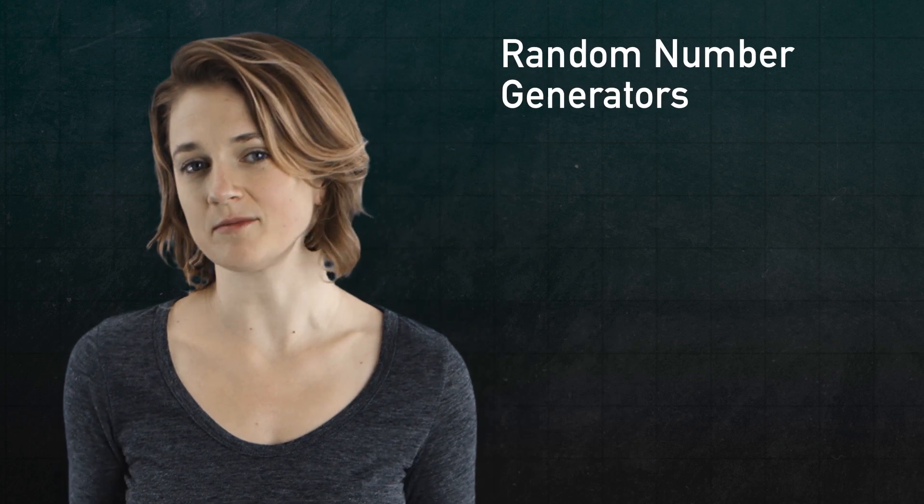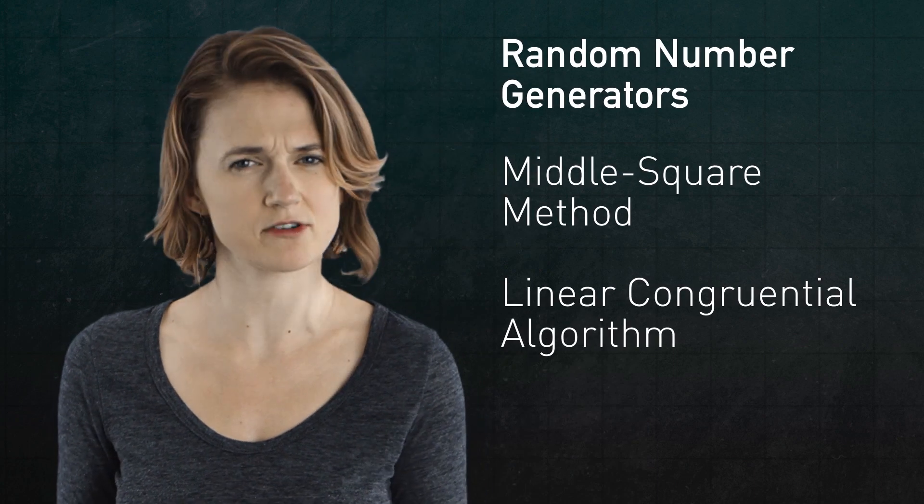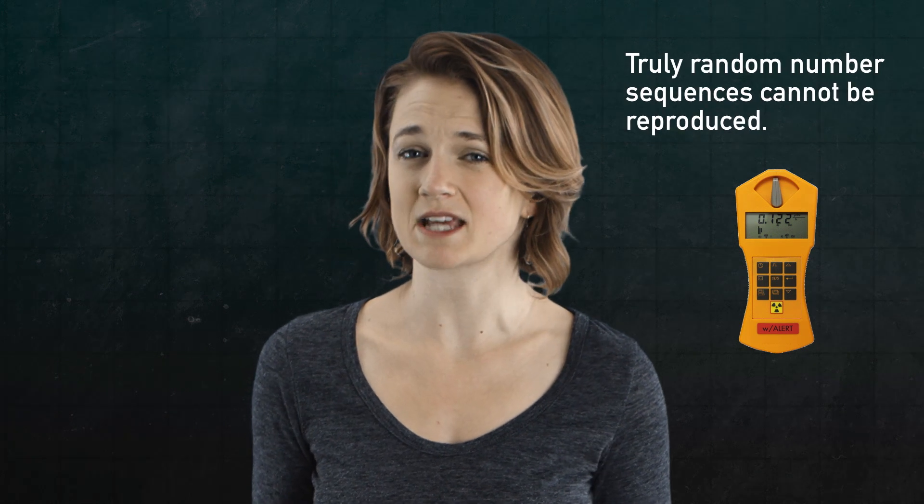With all these options for creating random-ish sequences, how do you decide whether to use a genuine random number generator or one of the two pseudorandom number generators, the middle square method or the linear congruential algorithm? Remember that one of the downfalls of generating truly random numbers by measuring some physical phenomenon, for example using a Geiger counter, is that you cannot reproduce the sequence, which can make it difficult to test a program.